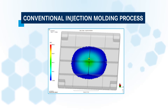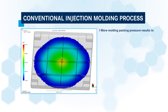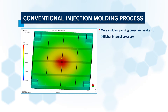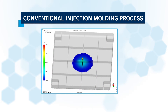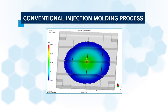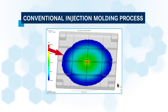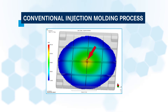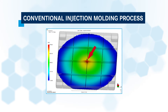With conventional injection molding, packing pressure is applied by forcing more plastic resin through the material feed gates. This results in higher internal pressure, and the packing pressure can only be applied until the material gates freeze off. As pressure continues to be applied, freeze off is also occurring in the part itself. The areas of the part that are furthest away from the gates will freeze off first and pressure can no longer be applied to these areas. But as packing pressure continues to be applied, more resin continues to be forced into the area nearest to the gates.